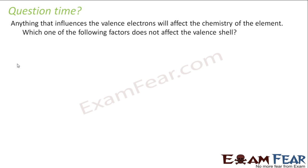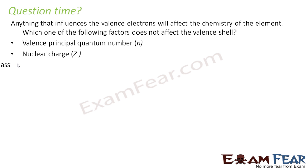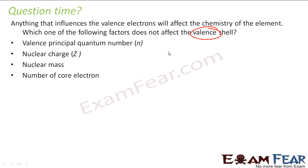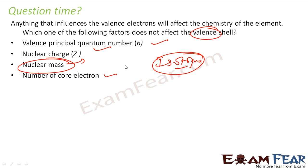Anything that influences the valence electron will affect the chemistry of the element. Which factor does not affect the valence electron: principal quantum number, nuclear charge, nuclear mass, or number of core electrons? The valence shell is impacted by n, nuclear charge, and number of core electrons. Nuclear mass does not matter — isotopes behave with almost the same properties because the electron and proton count is the same; nuclear mass comes from neutrons, which do not impact the valence shell. So nuclear mass is the answer.